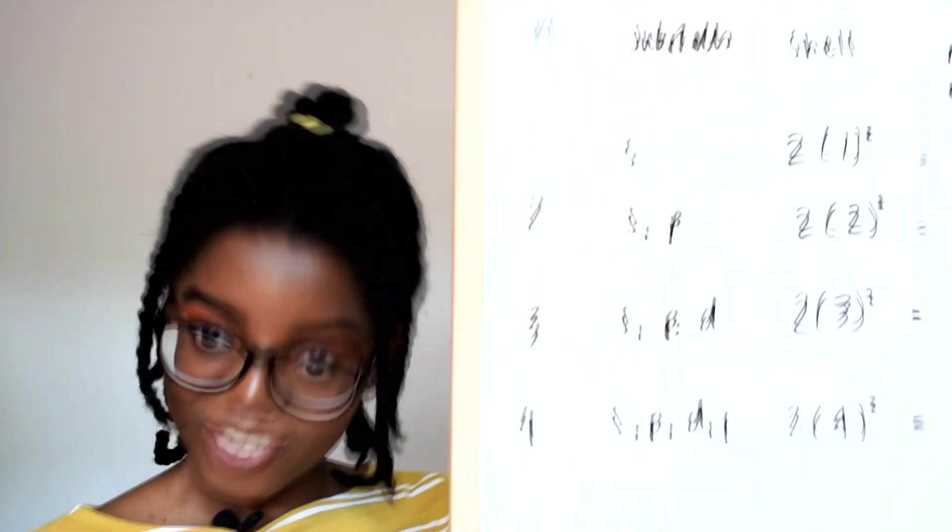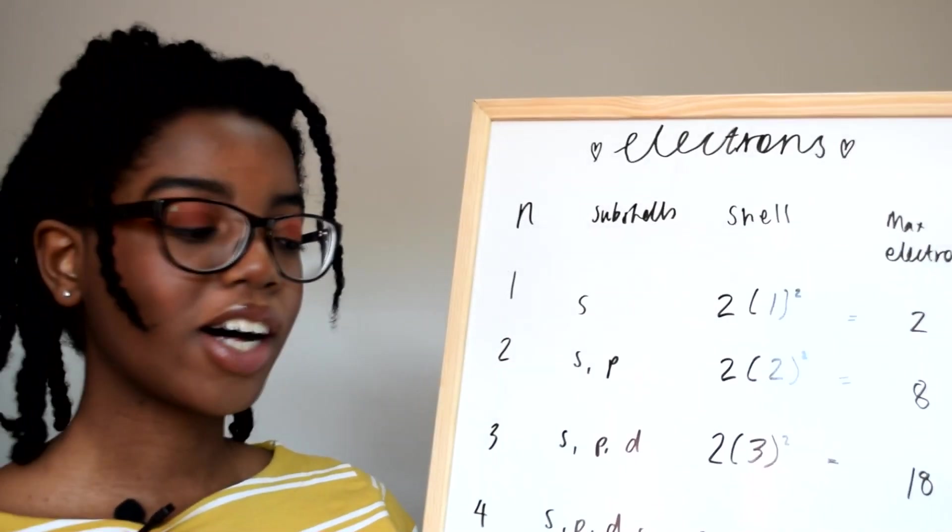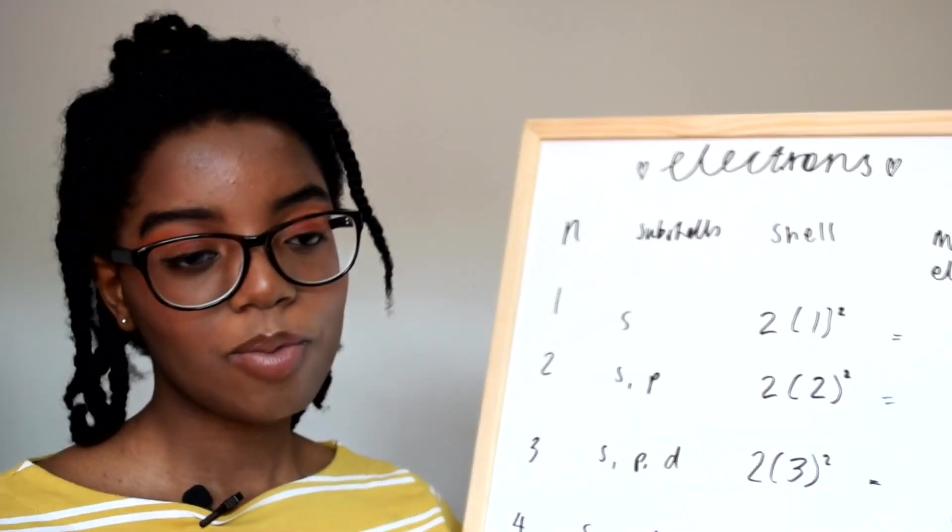From GCSEs you know just 2-8-8-2, but now we've got A level. With electron shells, this N being the electron shell number also known as the principal quantum number.